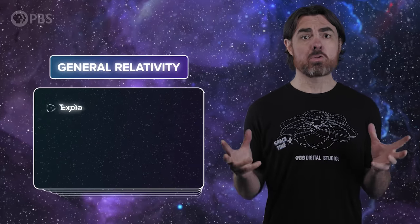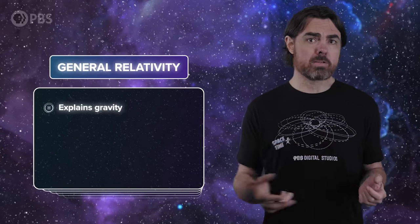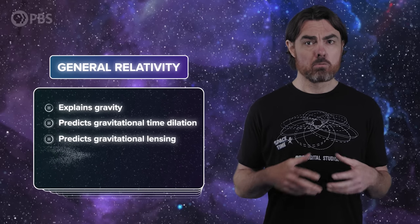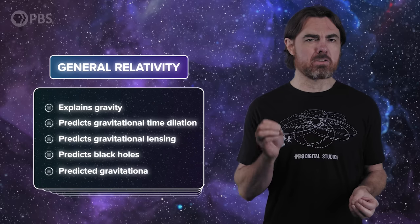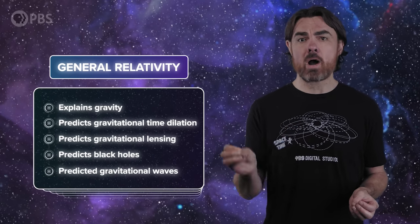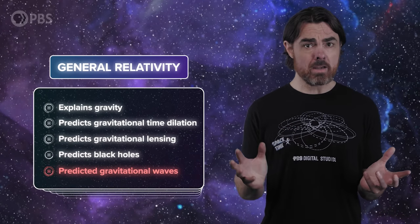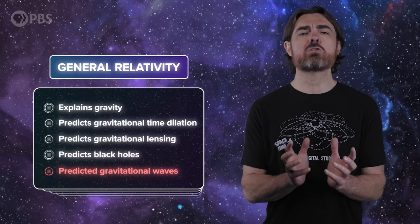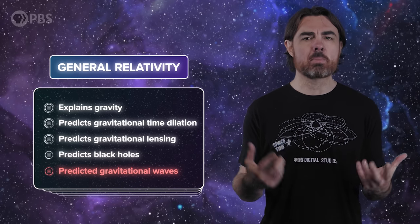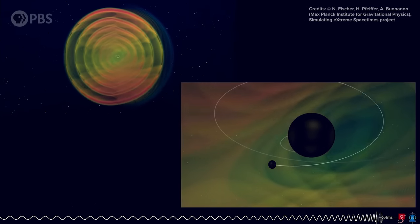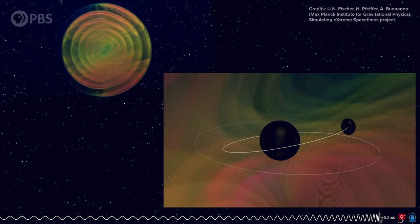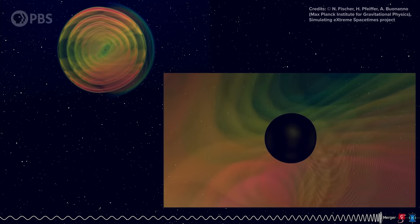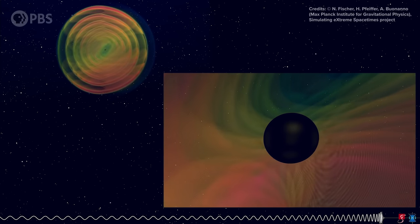The equations of GR give us so much more than gravity. They predict that gravitational fields slow clocks and deflect light, reveal the inevitability of black holes, and also predict that the fabric of space-time should carry waves. Gravitational waves were the last great prediction of general relativity to be experimentally verified, and that happened only in 2016 when LIGO spotted the space-time ripples caused when a pair of black holes spiraled together and merged over a billion light-years away.